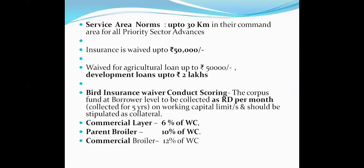Service area norms: in agriculture, up to 30 kilometers is the command area for all priority sector advances. This 30 kilometers is a new change. For agriculture insurance, up to ₹50,000 you can waive by taking NF-368. Waiving of agriculture loans — bills also you can waive up to ₹50,000. If it is a development loan, up to ₹2 lakhs you can waive, but within 15 days you have to inspect and make a certificate.